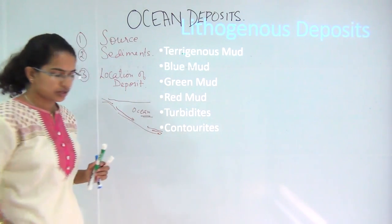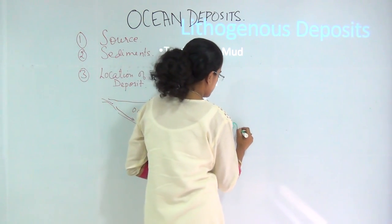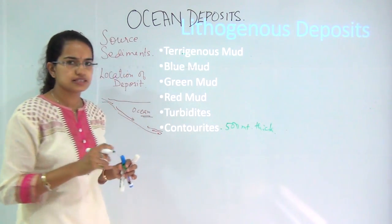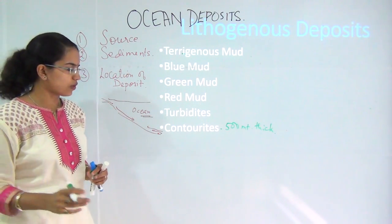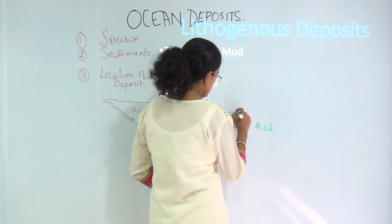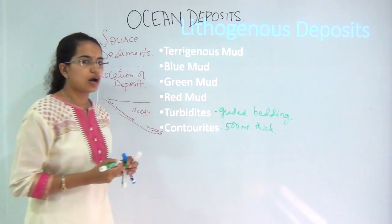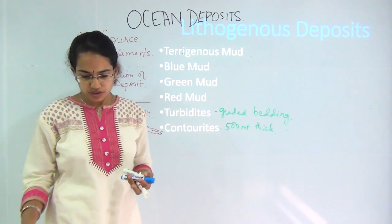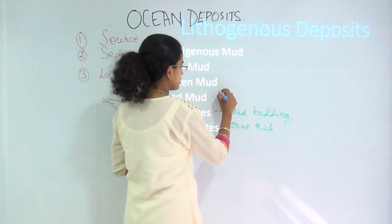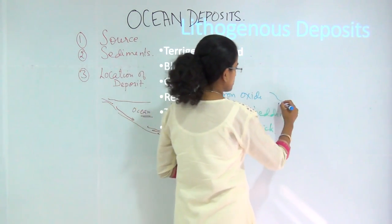Among these, contourites are formed at the level of contour currents and are usually 500 meters in thickness. Turbidites are due to the turbid movements of water — a kind of graded bedding. Red mud is formed through iron oxides present in the soil, which are deposited onto the ocean surface.